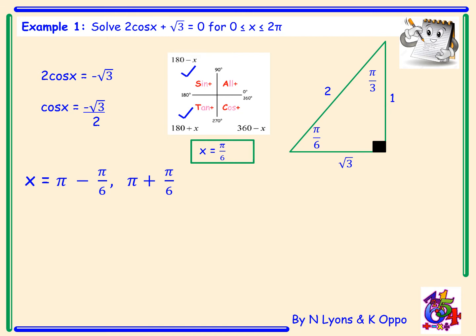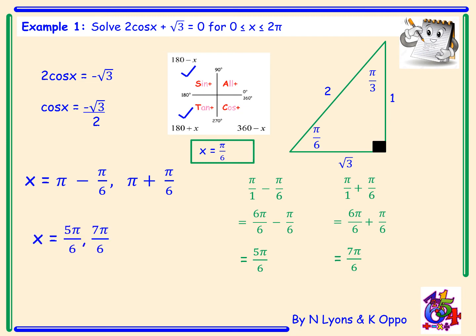We may need to do some fraction work at the side of our page. π − π/6 is π/1 − π/6; with a common denominator of 6 that's 6π/6 − π/6 = 5π/6. Similarly, π + π/6 is 6π/6 + π/6 = 7π/6. So our final answer is x = 5π/6 and 7π/6.